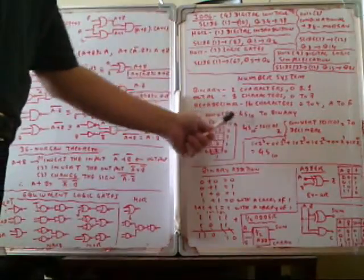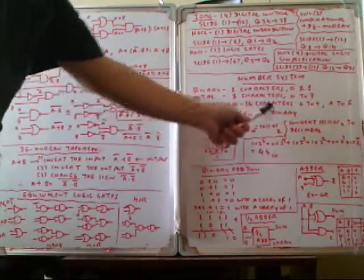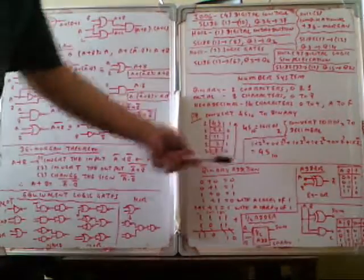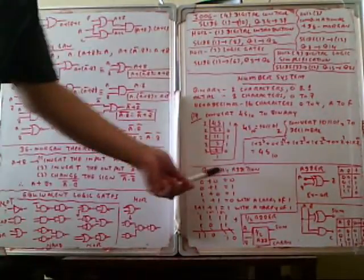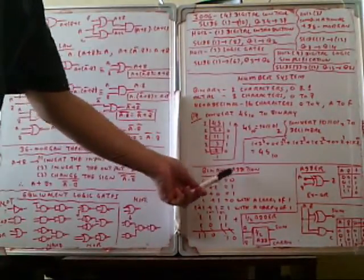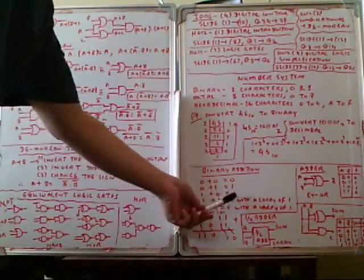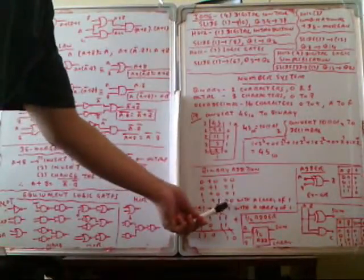We can also perform binary addition. The rules are: 0 plus 0 is 0; 0 plus 1 is 1; 1 plus 0 is 1; 1 plus 1 is 0 with a carry of 1; and 1 plus 1 plus 1 is 1 with a carry of 1.